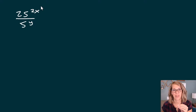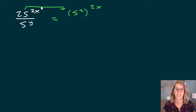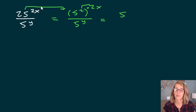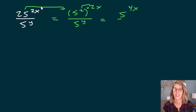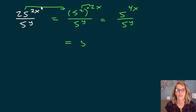For this one, I'm going to use like bases and the properties we've seen so far to simplify. Well, 25 happens to be 5 squared, so I can rewrite 25 as 5 squared and I get a 2x here. In my denominator I have 5 to the y — so 5 is my common base. In the numerator, I multiply the two powers together, and I get 2 times 2x, which is 4x, all divided by 5 to the y. Now I've got a quotient, so I subtract powers, and this turns out to be 5 to the 4x minus y.